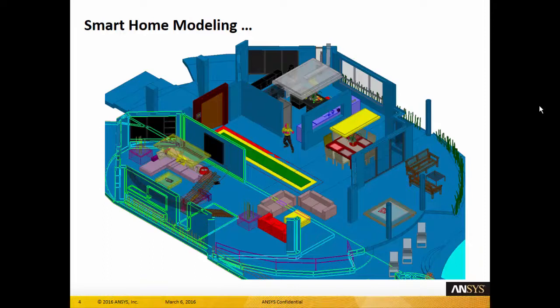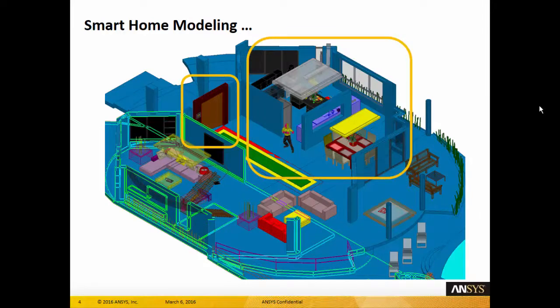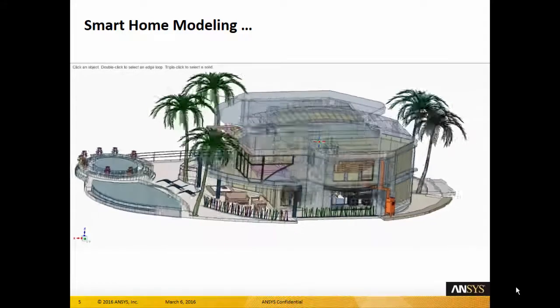Here we're highlighting several components of the smart home that are modeled using ANSYS tools. We're focusing on the wireless communication between the main control unit located near the entrance door and smart appliances in the kitchen area, a motion sensor in the security camera.